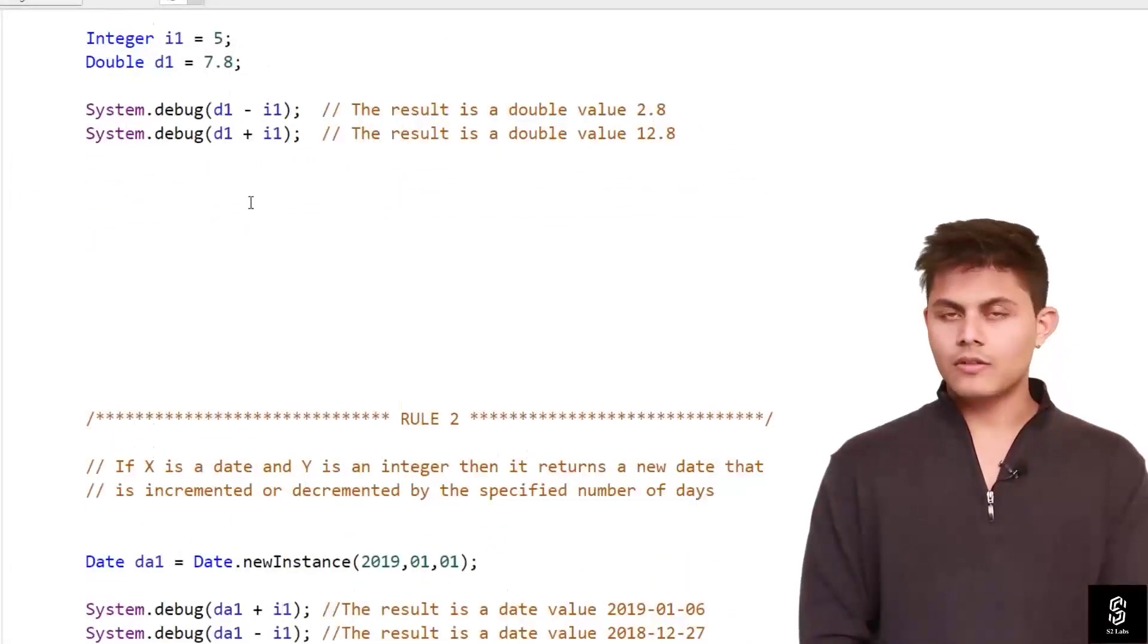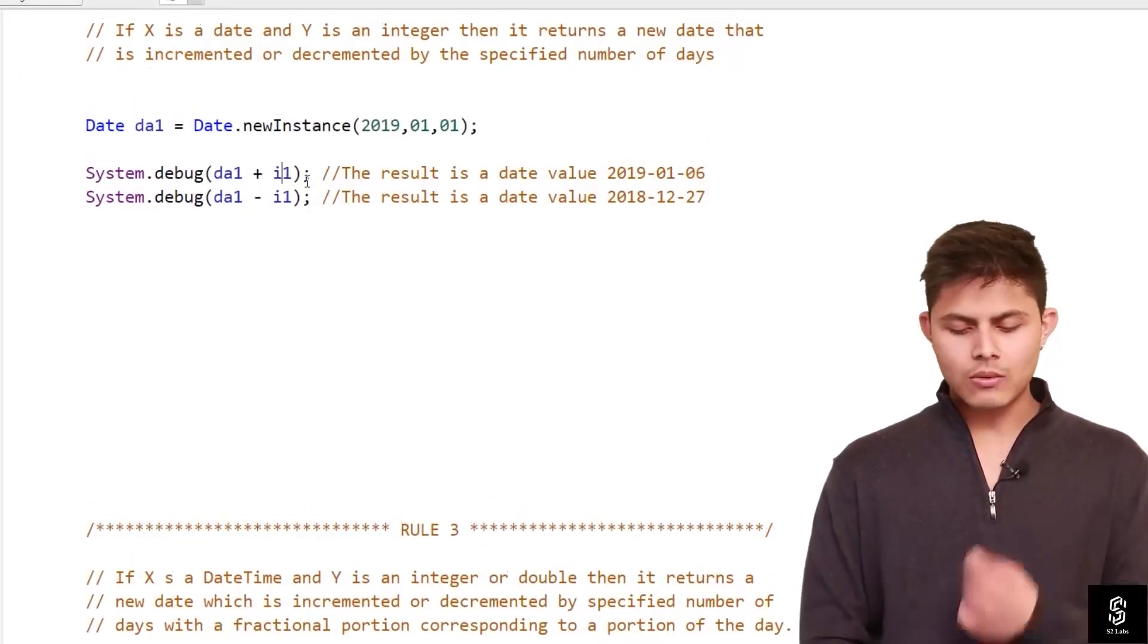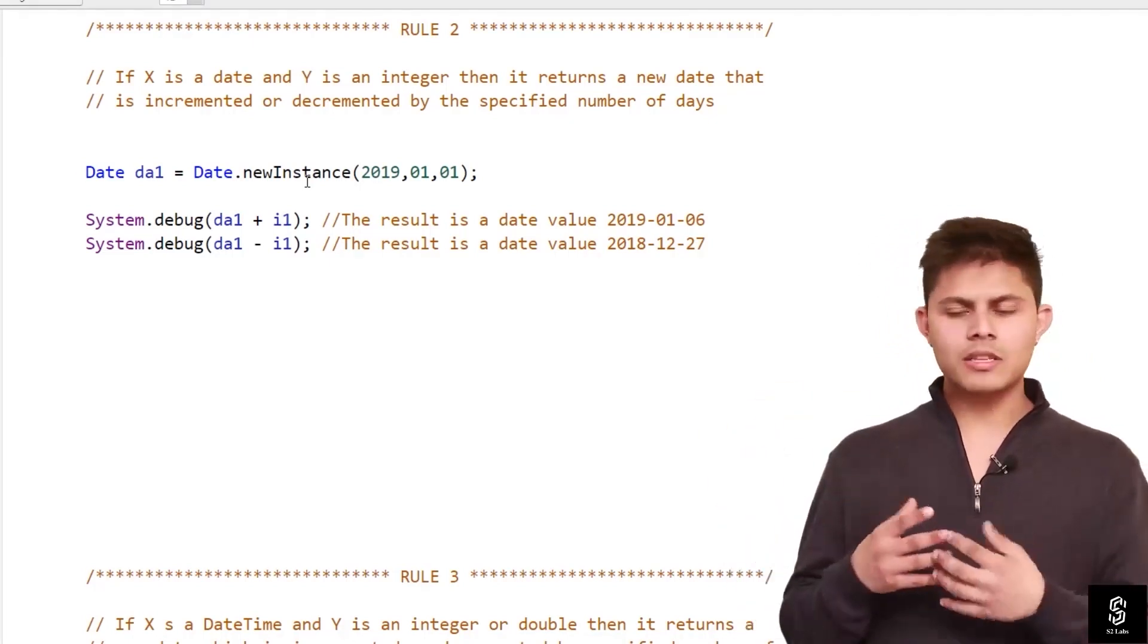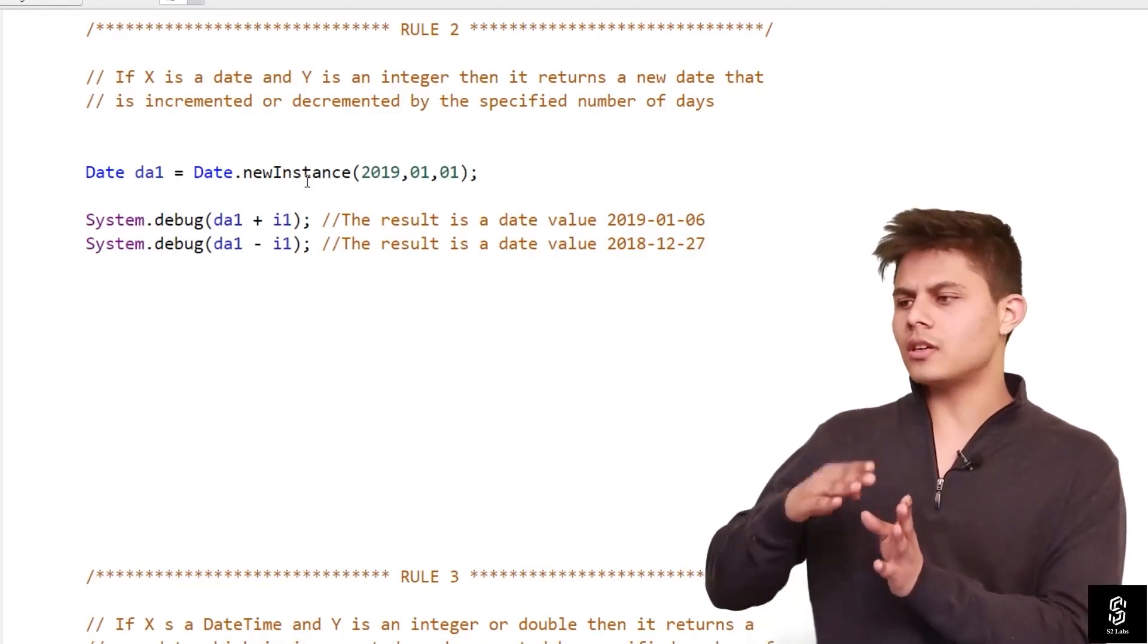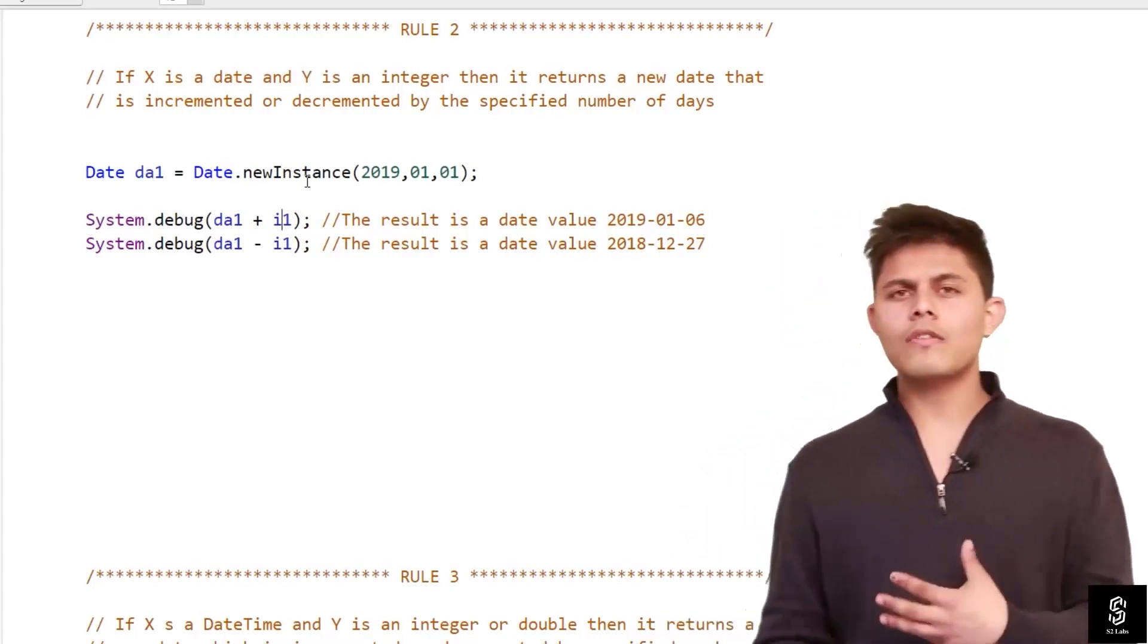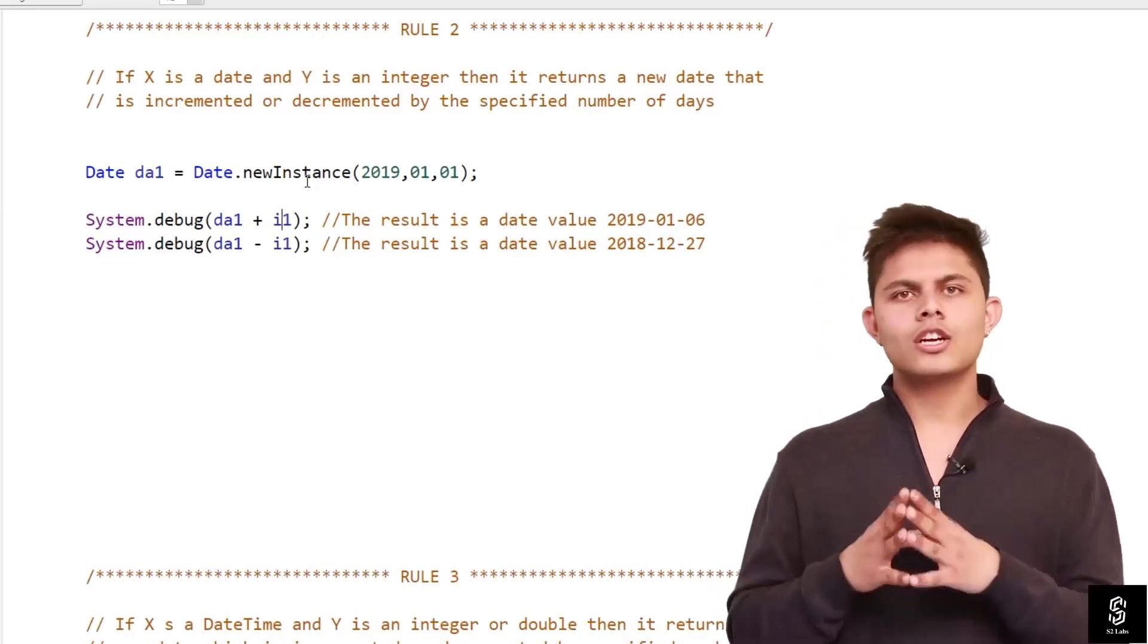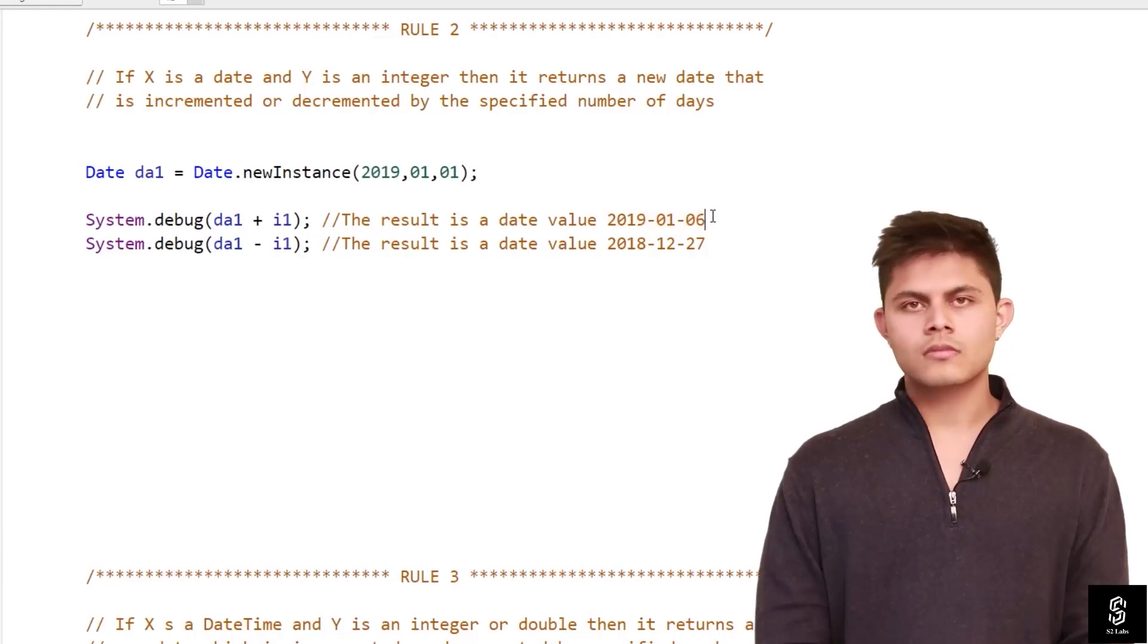In I1, we've got 5. If I'm going to add I1 to DA1, it will return a date that is incremented by 5. That means it will return the date which will be 5 days ahead from the date stored in DA1. So in DA1 we have 1st January 2019. If I add 5 to it, it will return 6th January 2019. And that's exactly what it's doing here, as you can see.